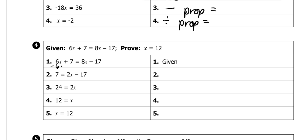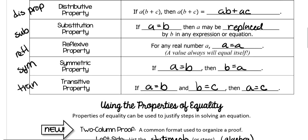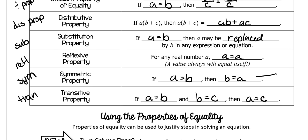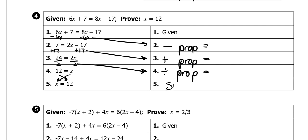On this one, they subtracted 6x from both sides, so since they're subtracting, it's the subtraction property of equality. Then you added 17 to both sides, which is the addition property of equality. Then you divided by 2 on both sides, which is the division property of equality. Then they flip-flopped around the equals sign, which is the symmetric property.